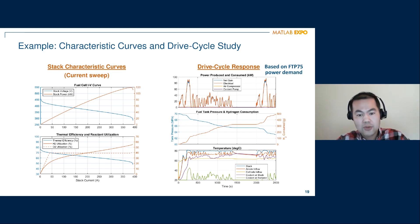So on the right, it's closer to a real-life scenario. This is based on the power demand from FTP 75 drive cycle. The power demand is actually recorded, pre-recorded for a full vehicle simulation. The model output from this give us an idea of the power generated by the stack, as well as the amount consumed by the balance of plant, that's on the first figure on the top.